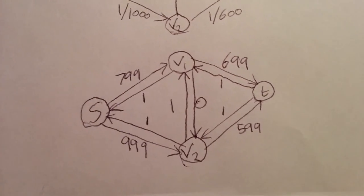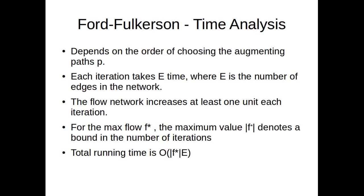And here's the residual network to show that change again. So the problem is, if we keep on doing this, we're going to have 1300 iterations till we hit the max flow. So to prove the time bound, imagine that each iteration takes E time, where E is the total number of edges in the network. So the flow network increases by at least one unit in each iteration. So for the maximum flow F star, or 1300 in this case, the maximum value of F star denotes a bound in the number of iterations. Henceforth, the total running time is thus big O of the value of F star times E.